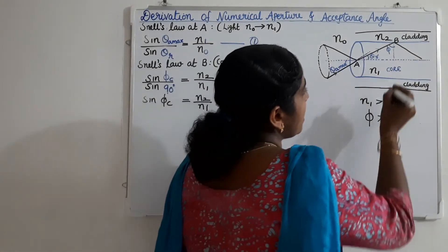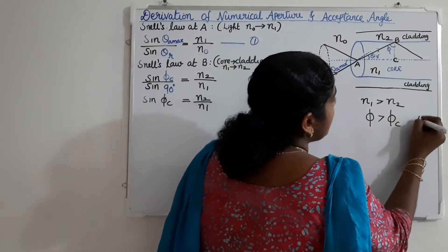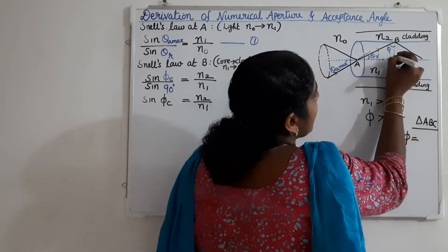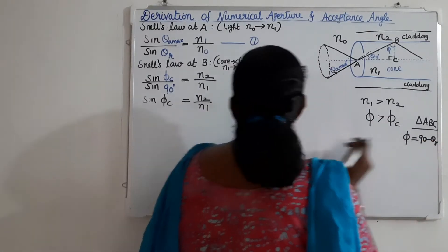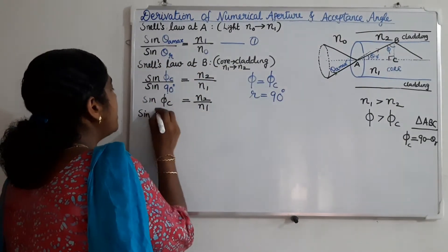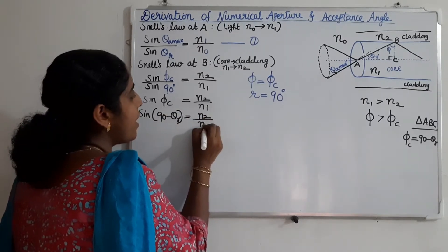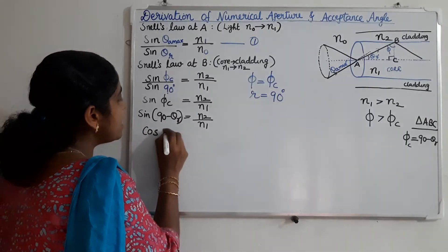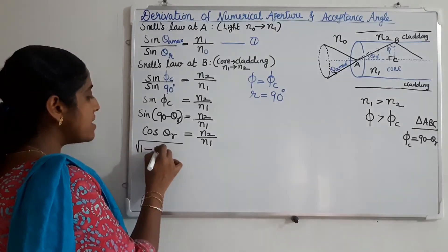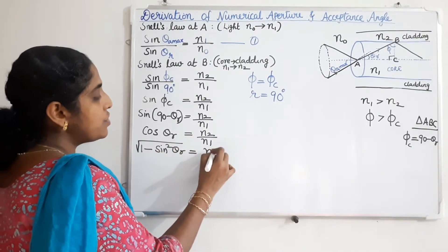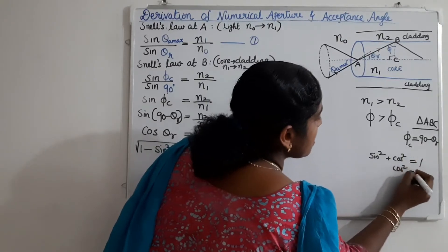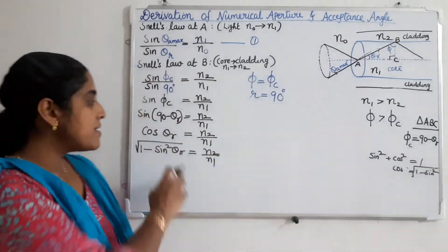Considering the right-angle triangle at the geometry of the ray path, the angle of incidence at point B is phi equals 90 minus theta R. Since we are considering phi as phi C, we write sine of (90 minus theta R) equals N2 divided by N1. Sine of (90 minus theta R) equals cosine theta R, so cosine theta R equals N2 divided by N1. Using the identity cosine theta R equals the square root of 1 minus sine squared theta R, we obtain: root of (1 minus sine squared theta R) equals N2 divided by N1.